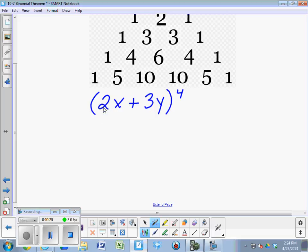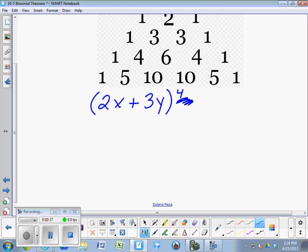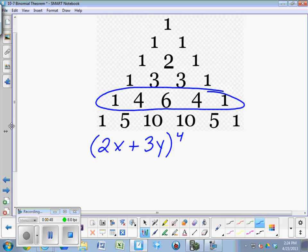But we still begin by identifying what the exponent is and then circling the corresponding row of Pascal's triangle. Since we're taking it to the fourth, we're going to use the fourth row. Keep in mind, the top row is considered row 0. 1, 2, 3, this is row 4.